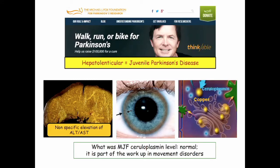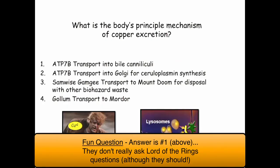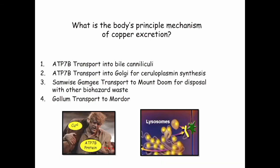Here's the summary. Michael J. Fox had normal ceruloplasmin — he had Parkinson's, not Wilson's. Just link Parkinson's with copper for the exam. Here's the key question: what is the body's principal mechanism of getting rid of copper? Transport into bile is the main way — ceruloplasmin is a marker, but that's not the main elimination route. Those other routes I would give you credit for too.